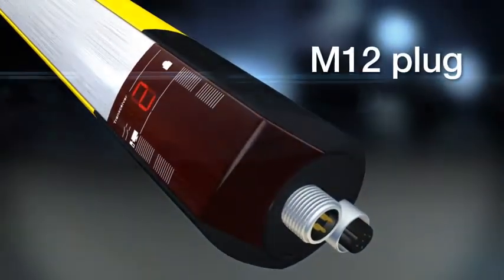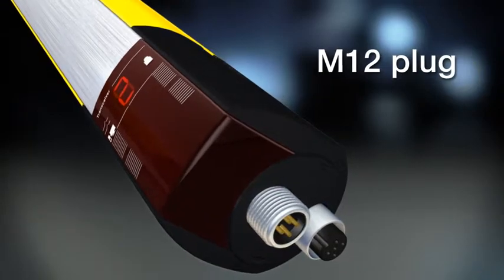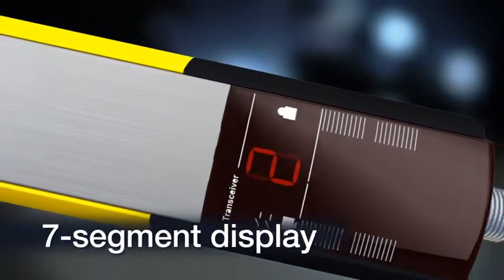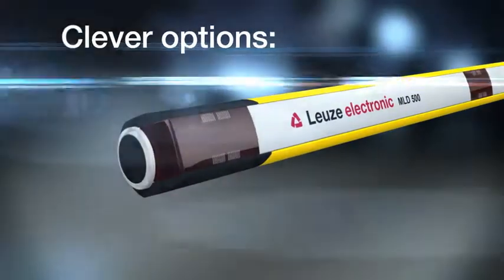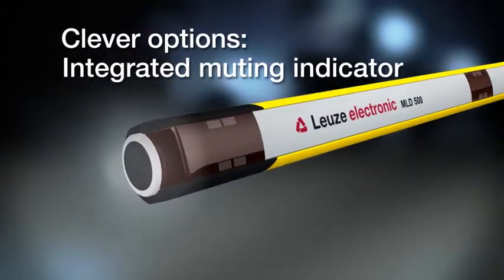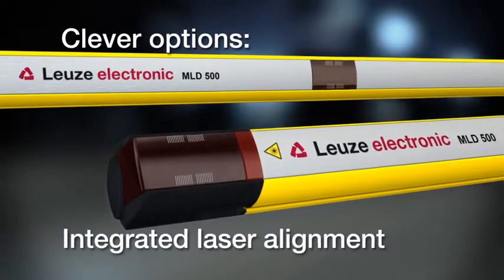In two series, tailored exactly to the user's requirements. Take the seven-segment display for example, making commissioning easy. Add clever features, such as integrated muting or the integrated laser alignment aid.